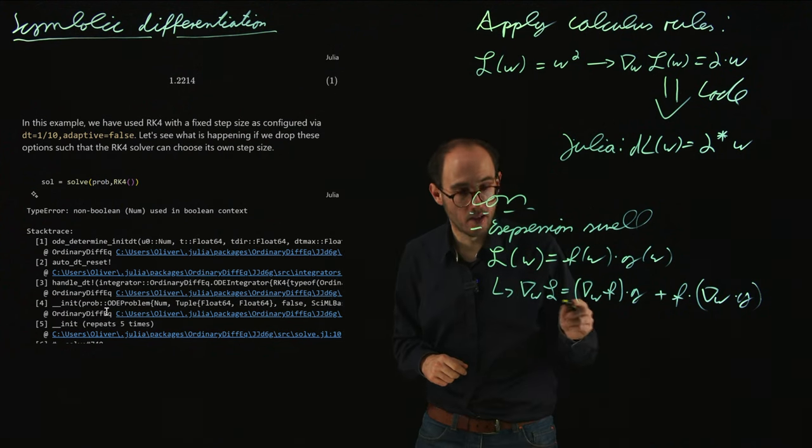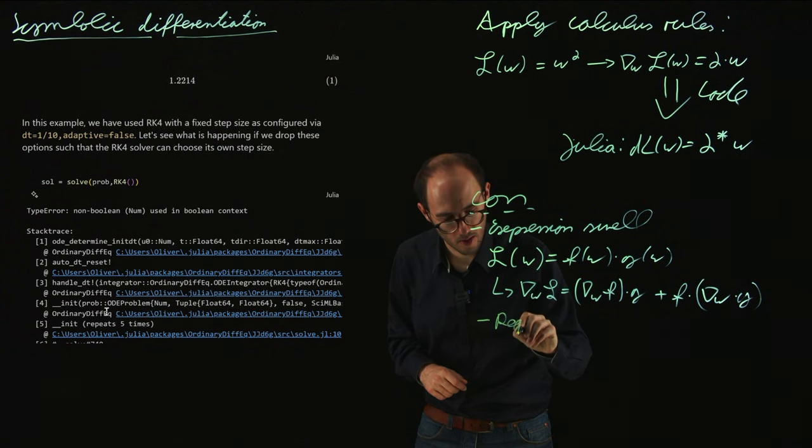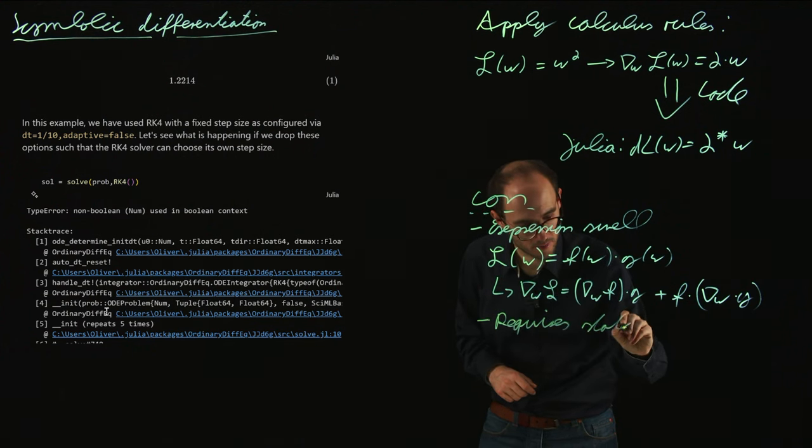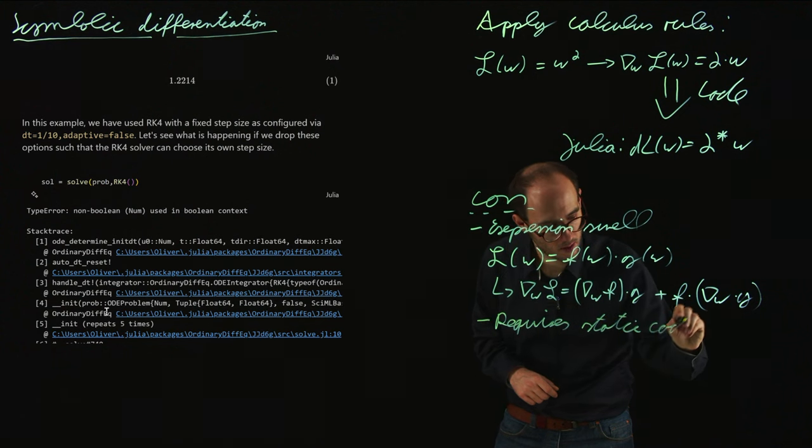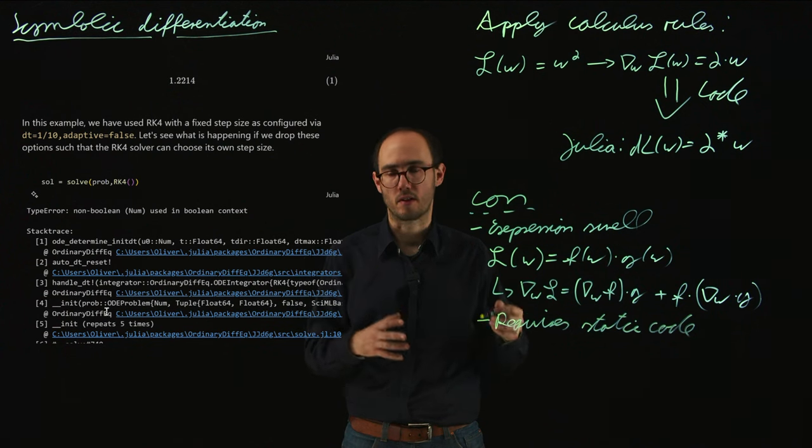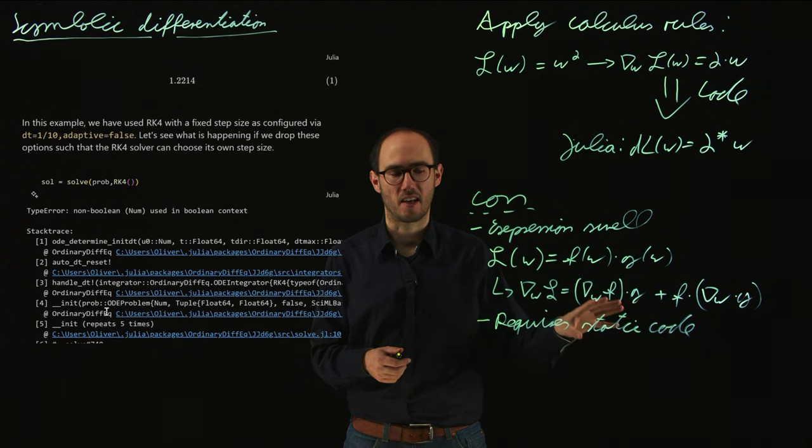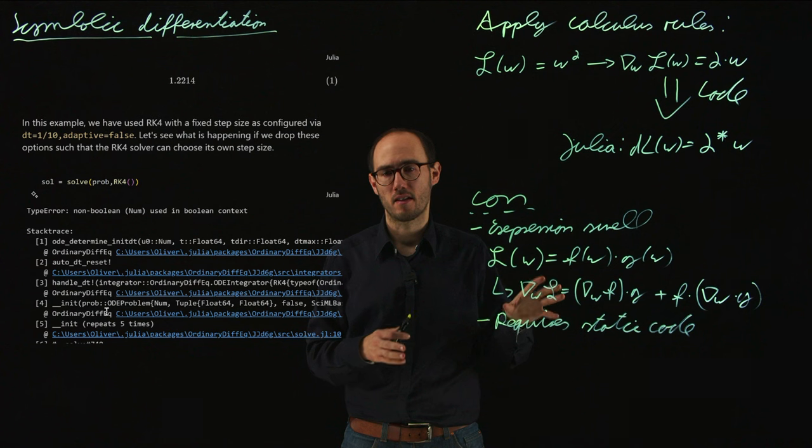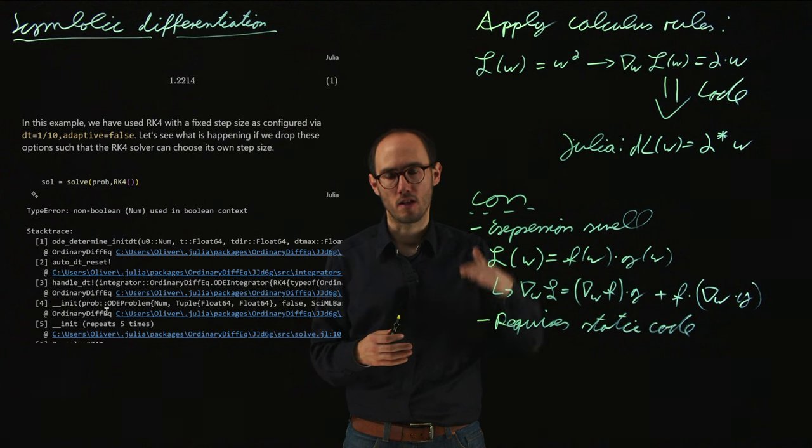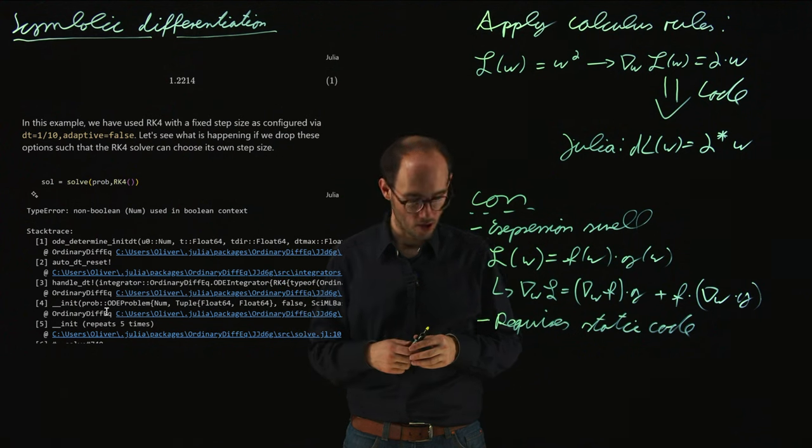So therefore, the closed form solution has the requirement of static code. There are also certain other computing requirements which depend on the specific toolbox and the specific programming language you're using, but definitely static code requirement is one of the basic examples. So that means that symbolic differentiation cannot be used the entire time for all implementations of computing code, especially if I'm using multiple sub-packages like the ordinary differential equation solver.